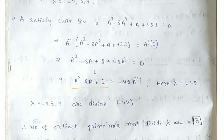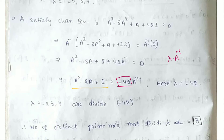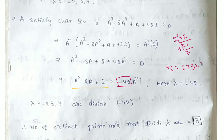This confirms the formula A² - 8A + I = -42·A⁻¹, so λ = 42. Now we apply prime factorization: 42 = 2 × 3 × 7. So we have 3 distinct prime factors.